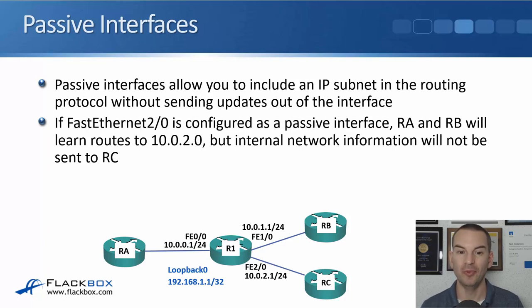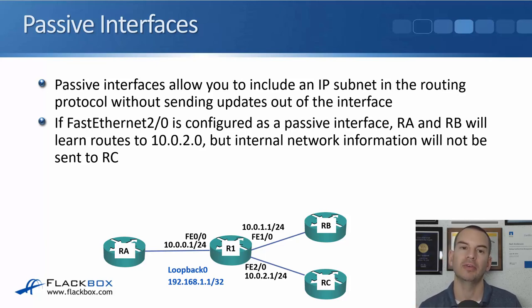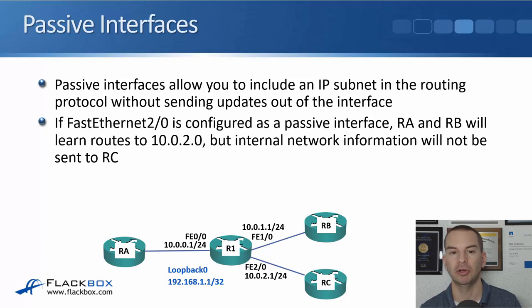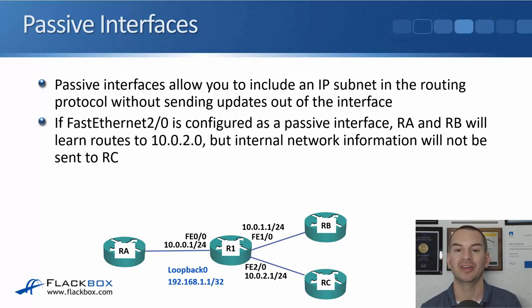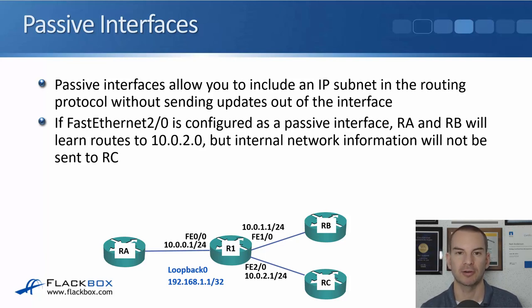So what if we actually need RA and RB to learn a route to get to 10.0.2.0? That's where passive interfaces come in. Passive interfaces allow you to include an IP subnet in the routing protocol without sending updates out of the interface. So if FastEthernet 2/0 is configured as a passive interface, RA and RB will learn routes to 10.0.2.0 but internal network information will not be sent out to RC — which is exactly what we wanted.